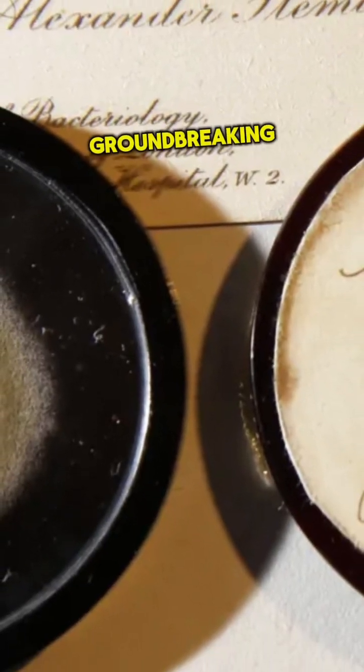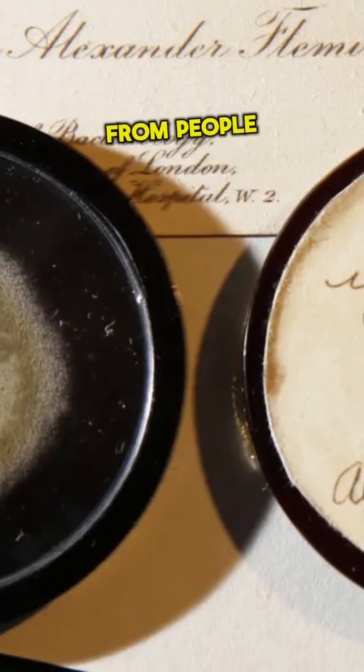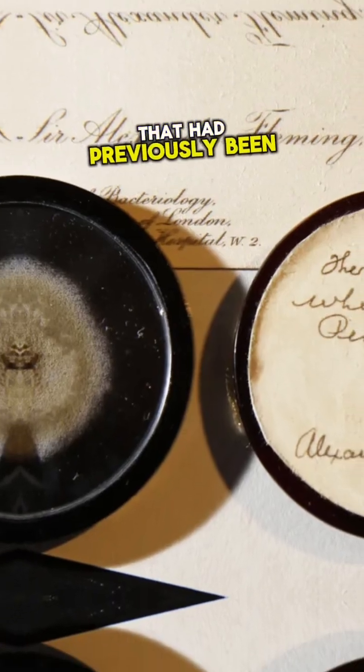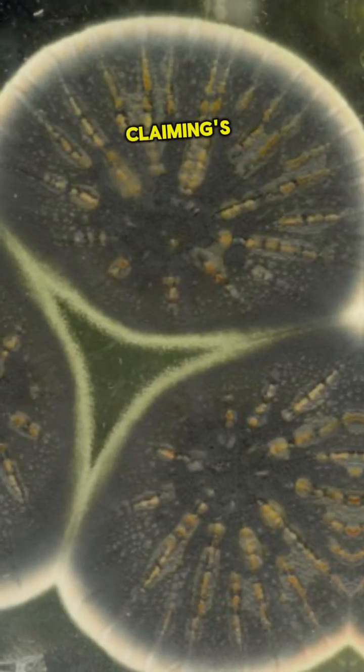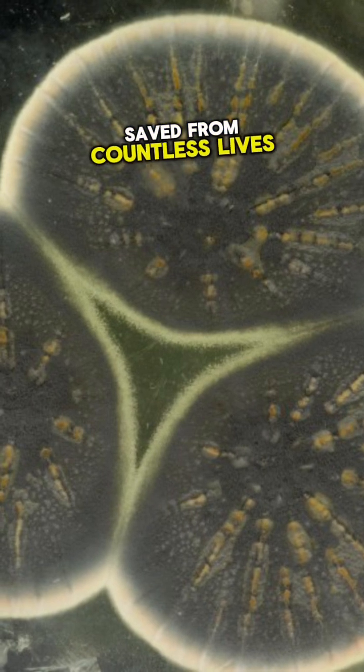This discovery was groundbreaking. Penicillin was the first true antibiotic, a drug capable of treating bacterial infections that had previously been life-threatening. Fleming's discovery would eventually revolutionize medicine and save countless lives.